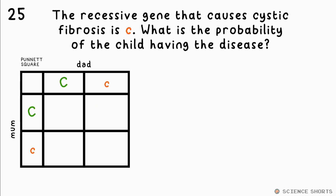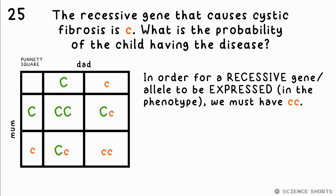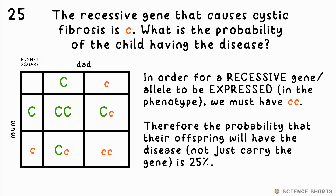Here's a Punnett square for parents carrying the recessive gene or allele that causes cystic fibrosis. What's the probability that their child will actually have the disease? In order to have the disease the child has to have two little c alleles — two recessive alleles. So that's a 25% probability.